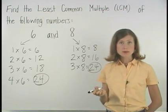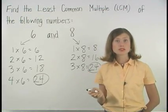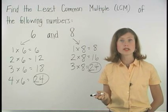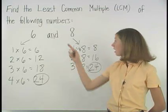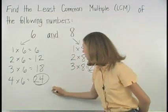Notice that we can stop here because all other multiples that we find will be greater than 24. So the least common multiple, or LCM, of 6 and 8 is 24.